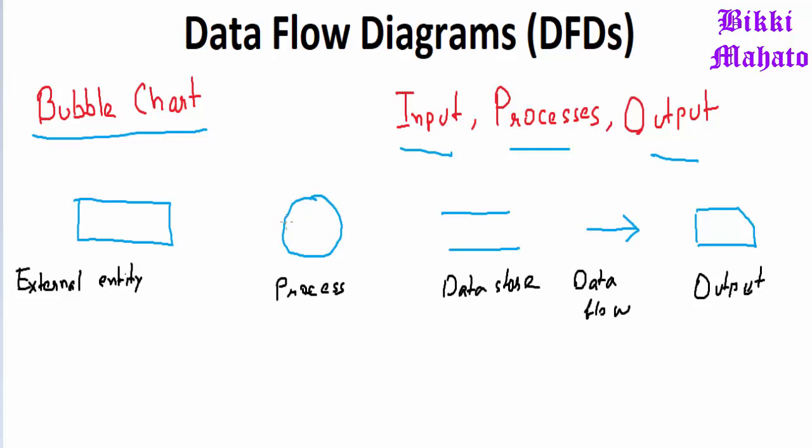Next we have this circle, this is known as process or it is also known as a function symbol. A function is represented by the circle, simple, these bubbles are like annotated with the names of corresponding functions. Suppose a process is there like making a certain thing, so that will be represented by a circle, that is known as process.